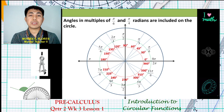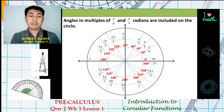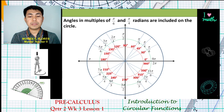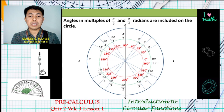You can compute or verify these by converting our degree measurement to radian measurement. The multiples of π/4 are: π/4, 3π/4, 5π/4, and 7π/4.